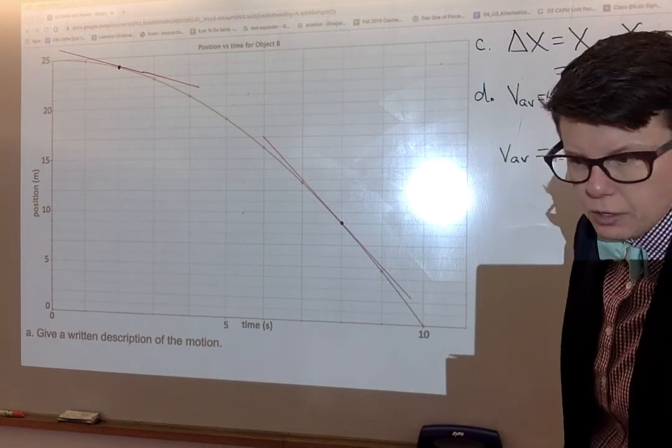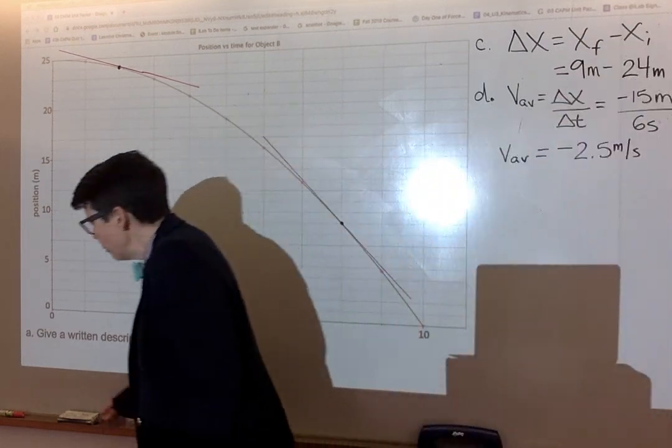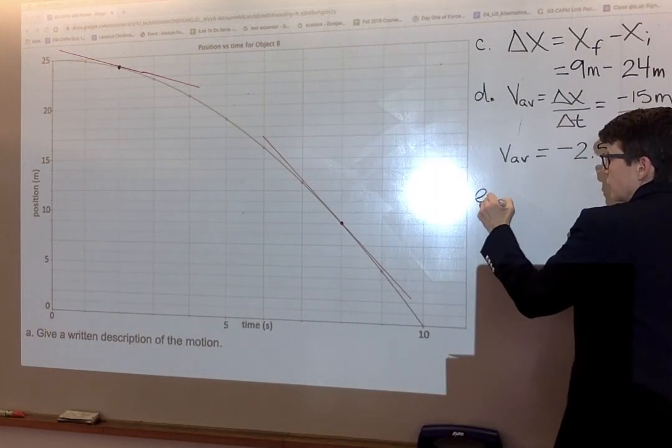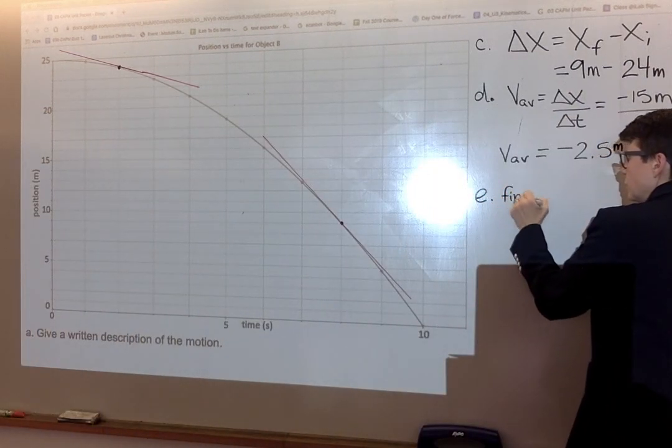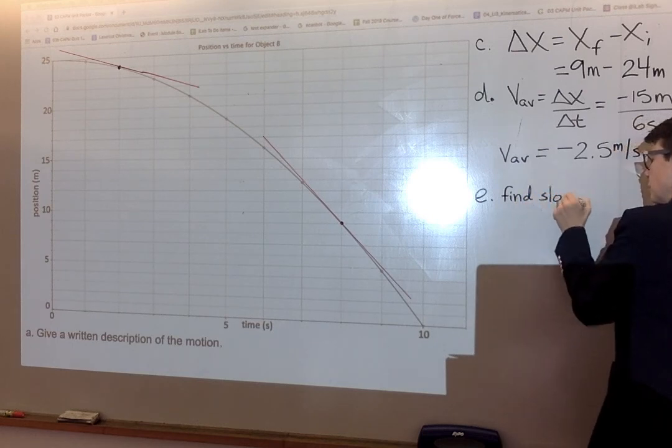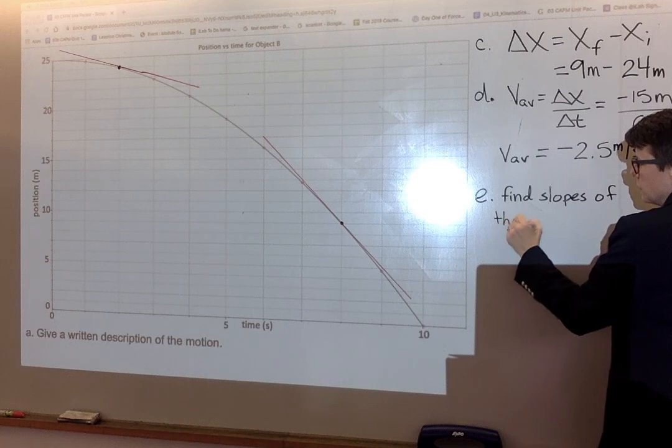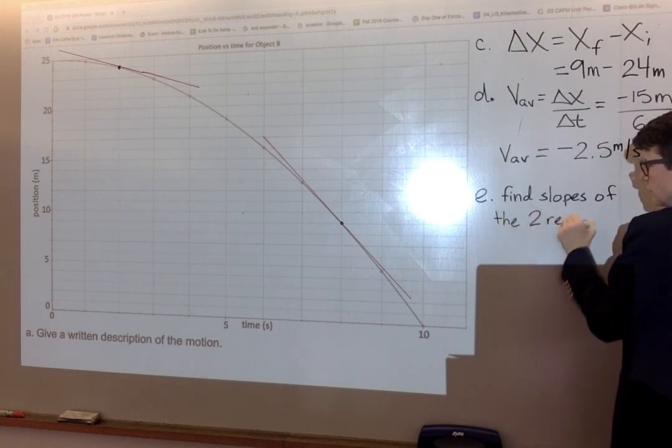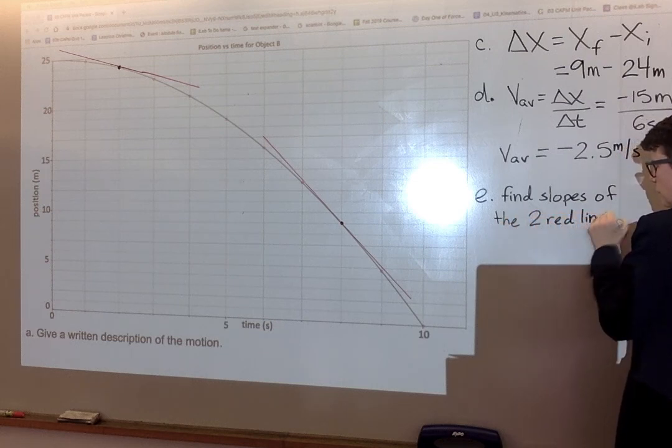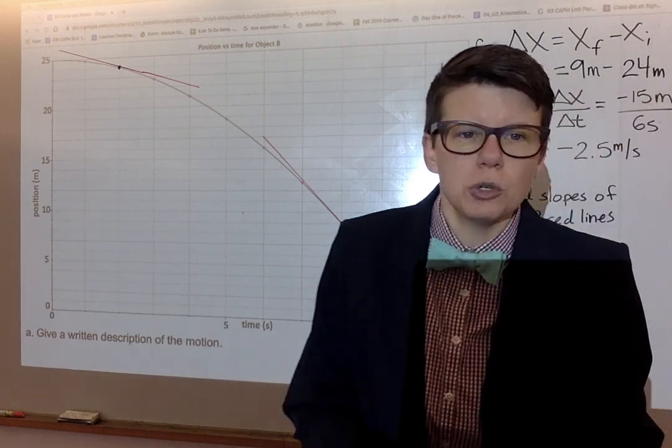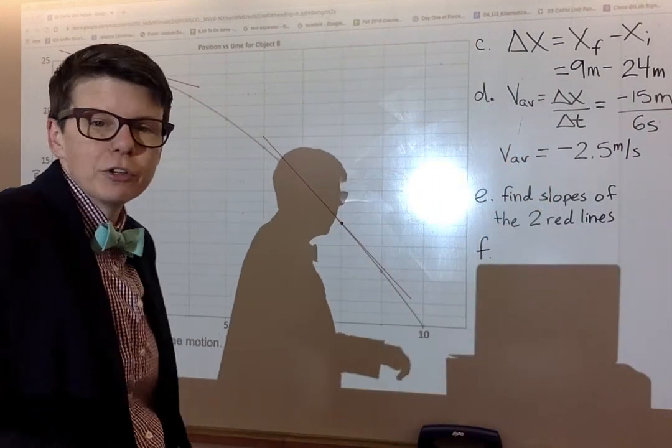That is part E of the question. I'm going to make a note of that on here. Find slopes of the two red lines on the graph here at this point.